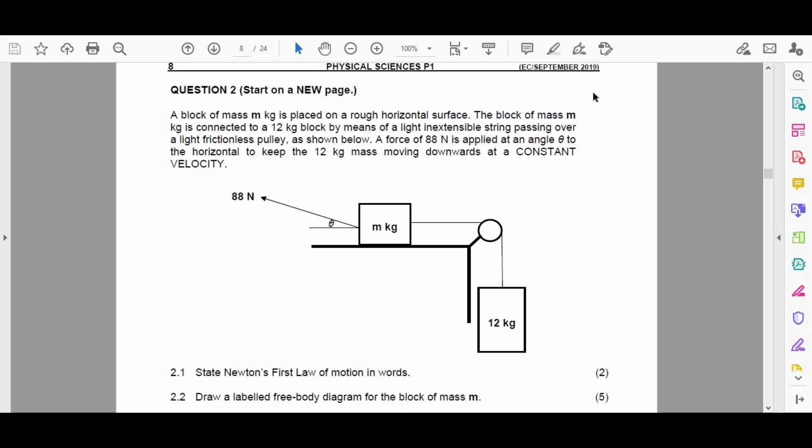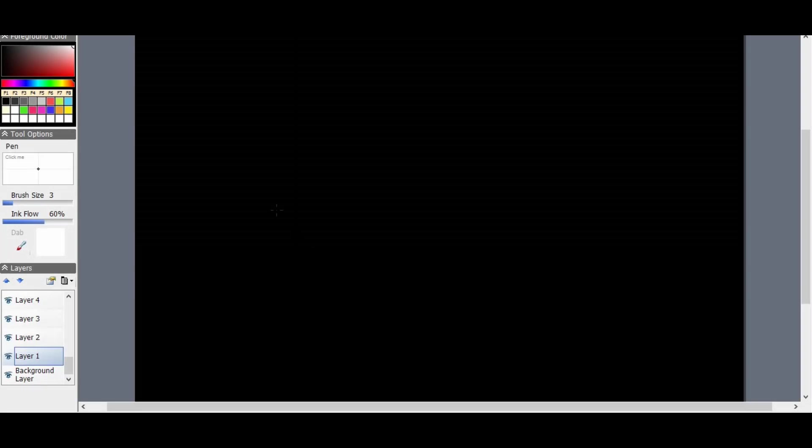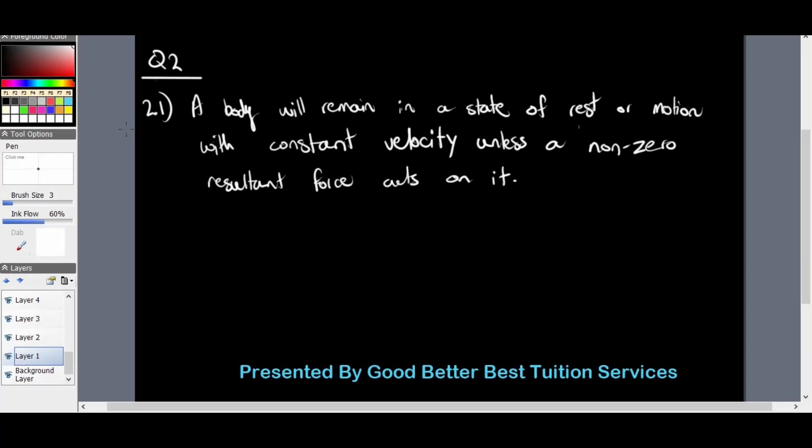Question 2.1: A body will remain in a state of rest or motion with a constant velocity unless a non-zero resultant force acts on it. Another way that we can define Newton's first law of motion is to define it as: an object will continue in a state of rest or uniform velocity unless it is acted upon by an unbalanced force. Either one of those definitions would have granted you two marks.